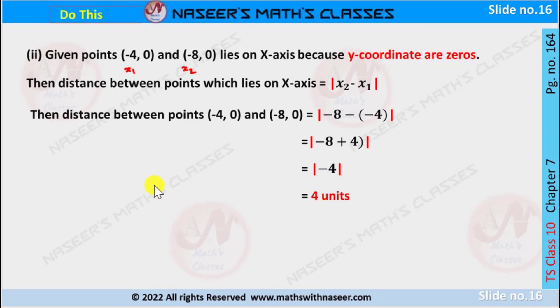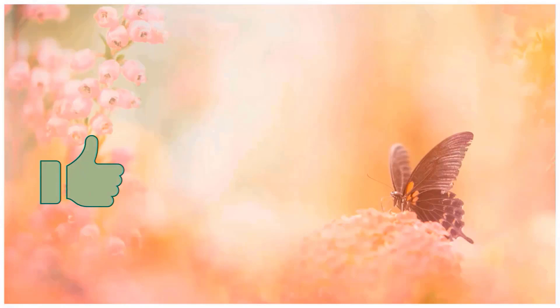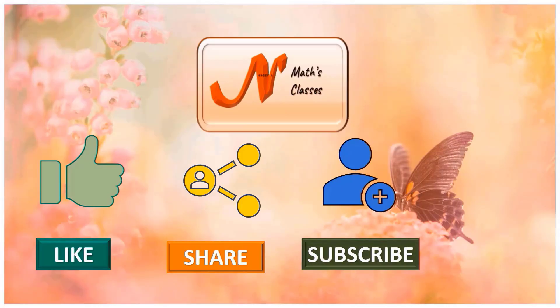So distance between the points (-4, 0) and (-8, 0) which lie on x-axis is 4 units. Please like, share, subscribe our channel for latest updates by pressing the bell icon.